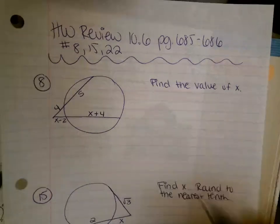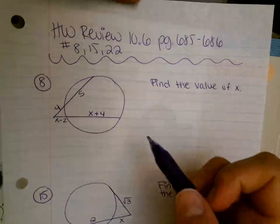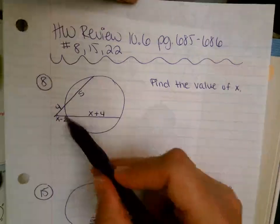Number 8, find the value of x. So in order to do this, it's outside times whole equals outside times whole. The outside portion times the whole amount equals the outside portion times the whole segment.